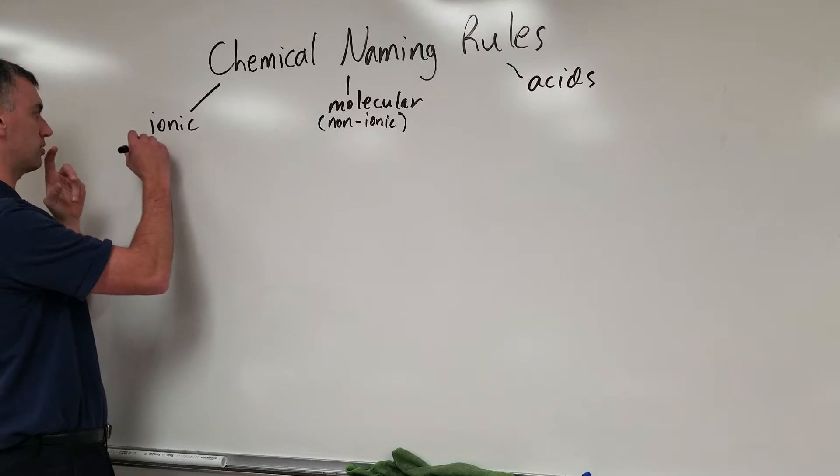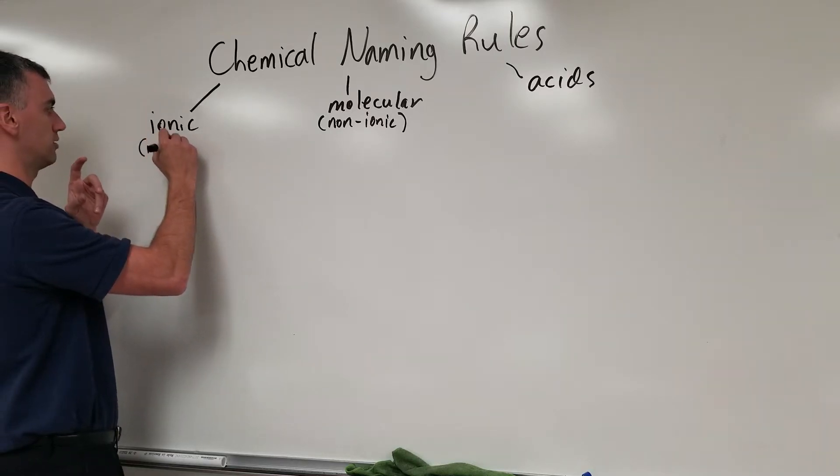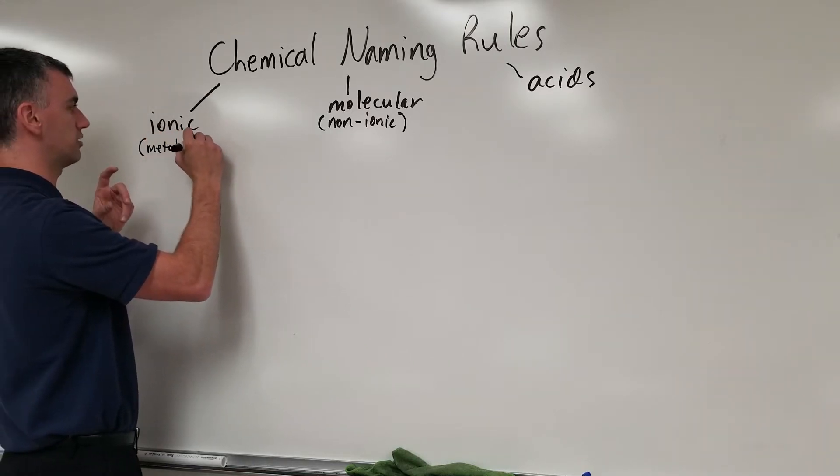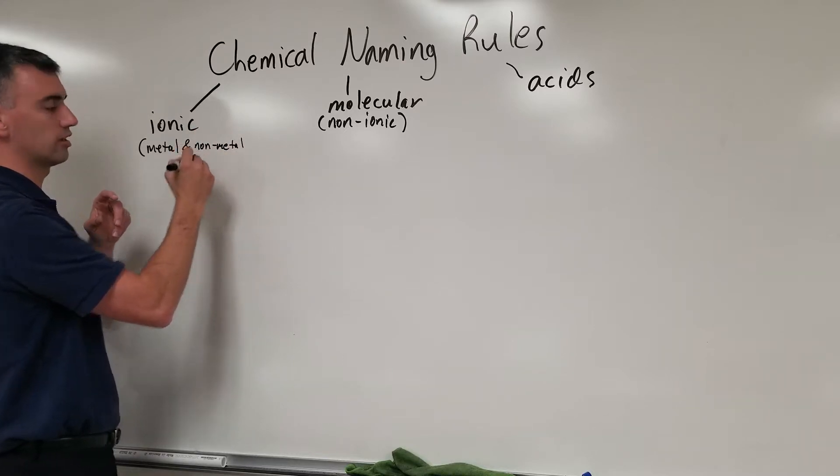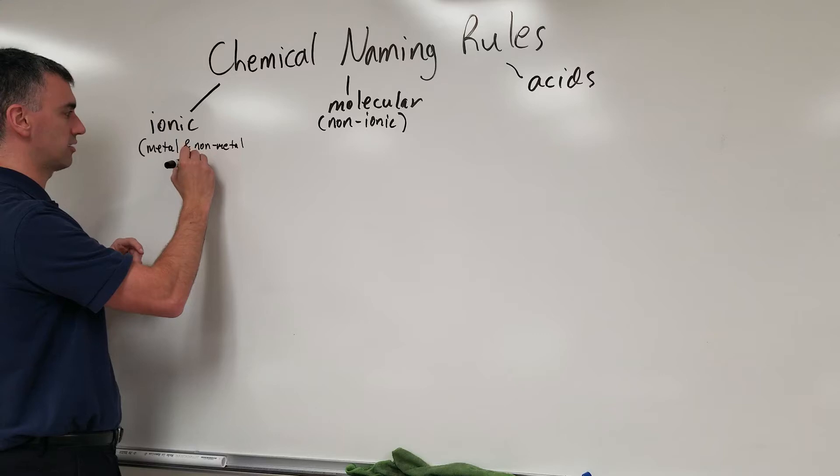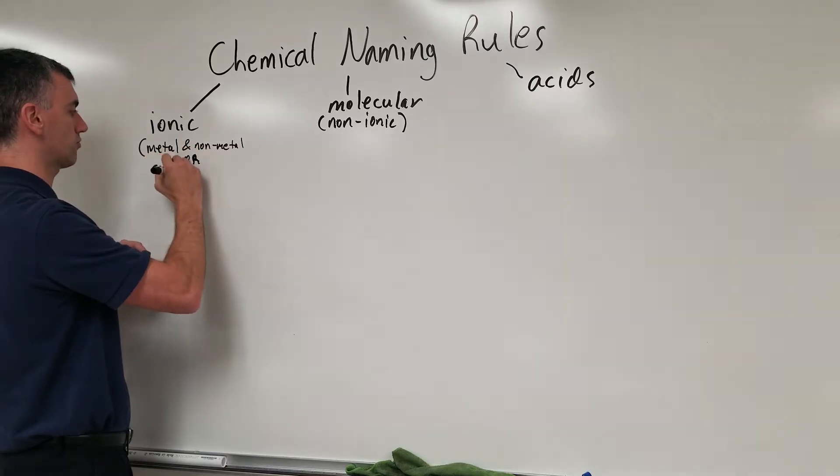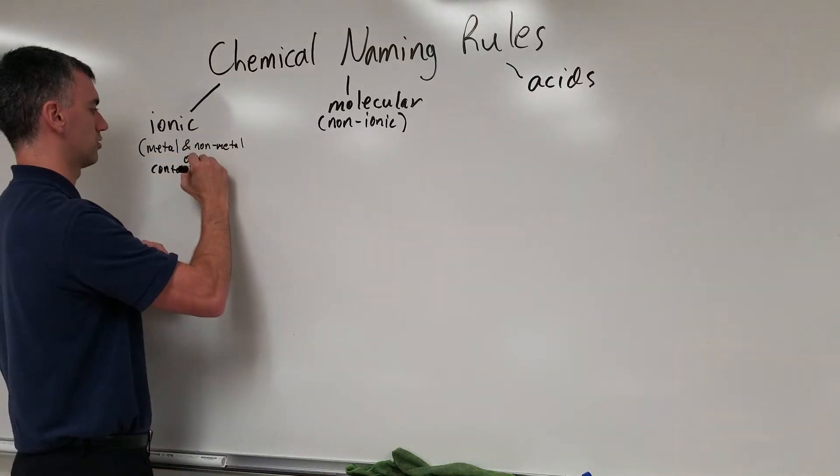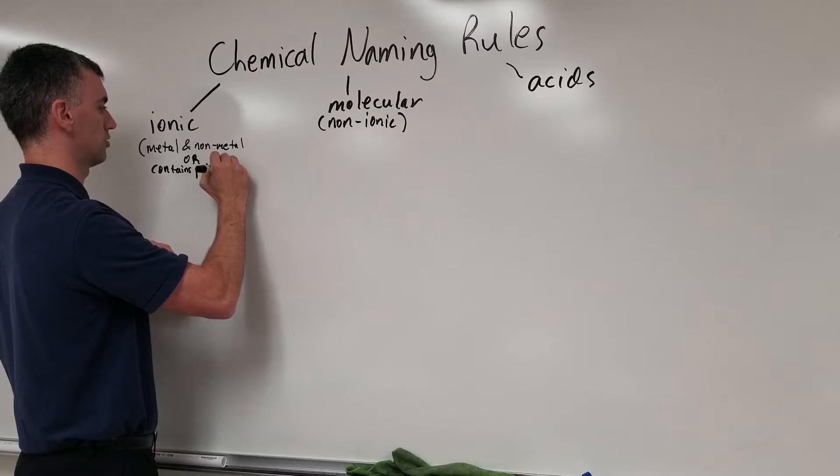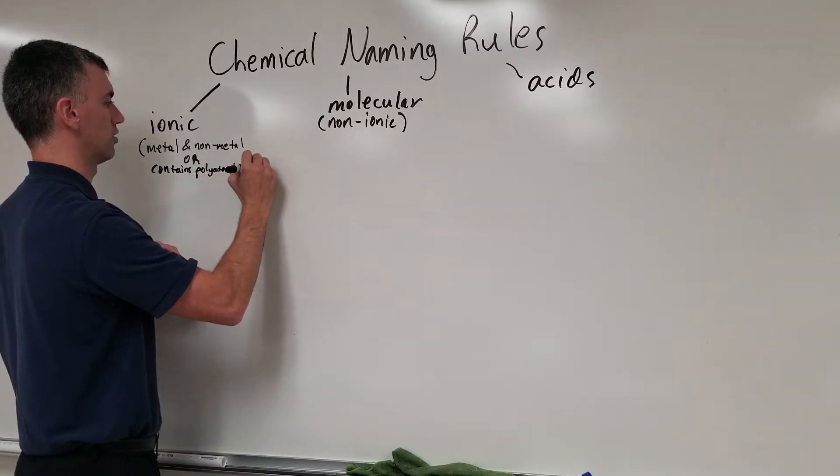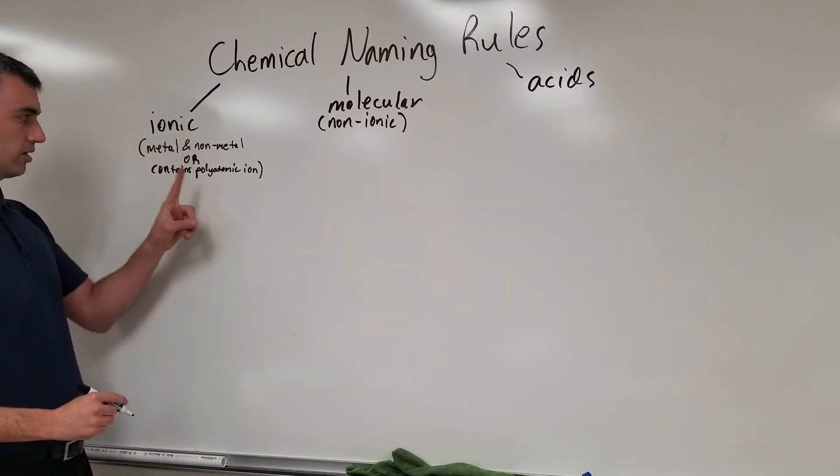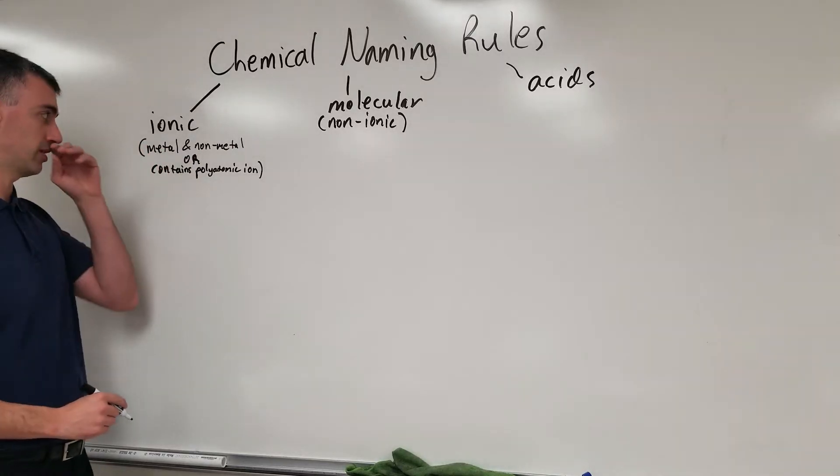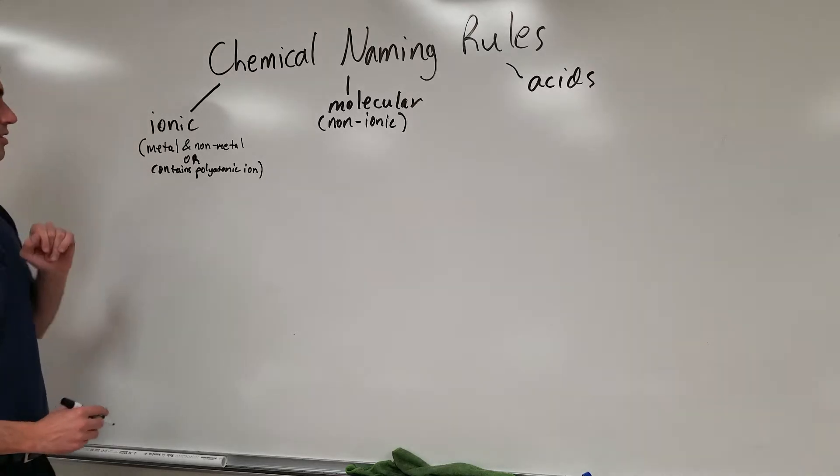With ionic, molecular and acids, let's go through how you recognize one of each of them. An ionic compound is either going to be metal and non-metal, or it contains a polyatomic ion. So an ionic compound either contains a metal and a non-metal, or a polyatomic ion somewhere in the formula.